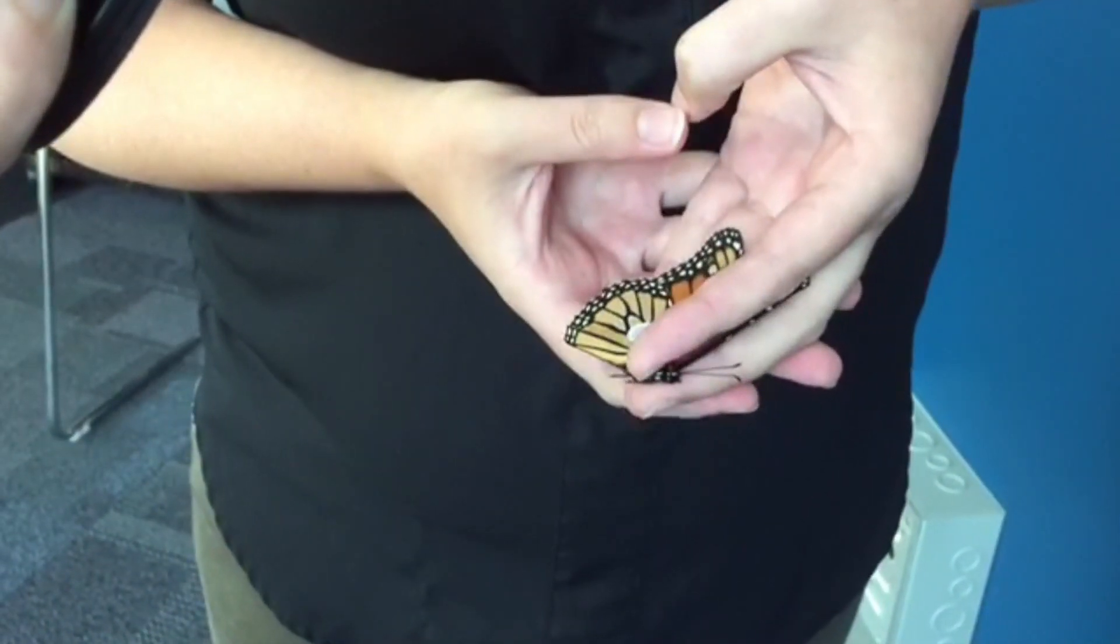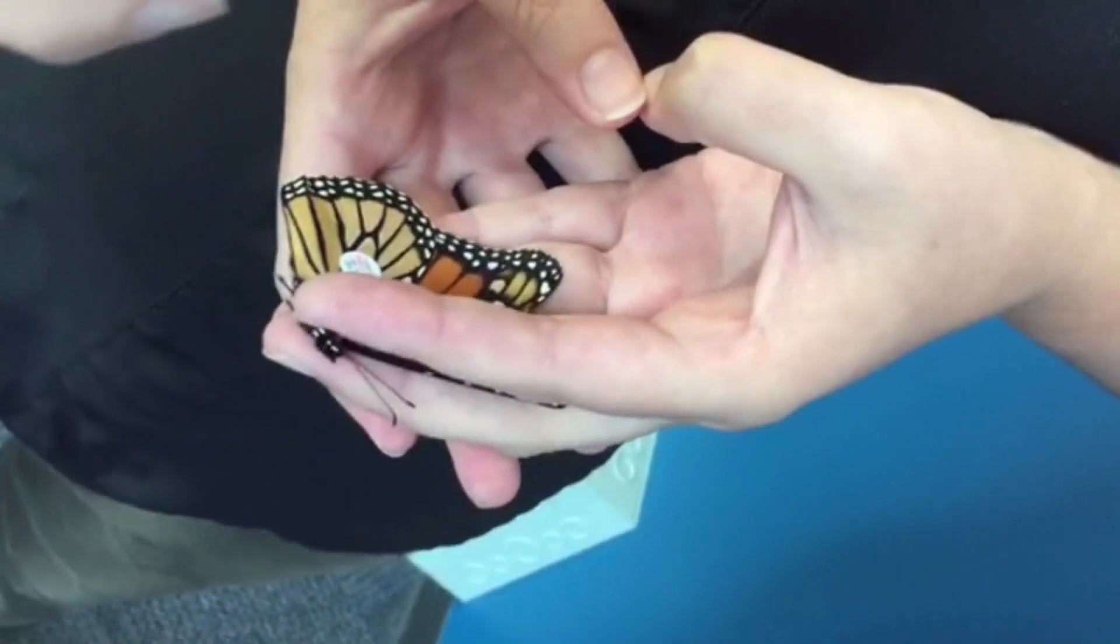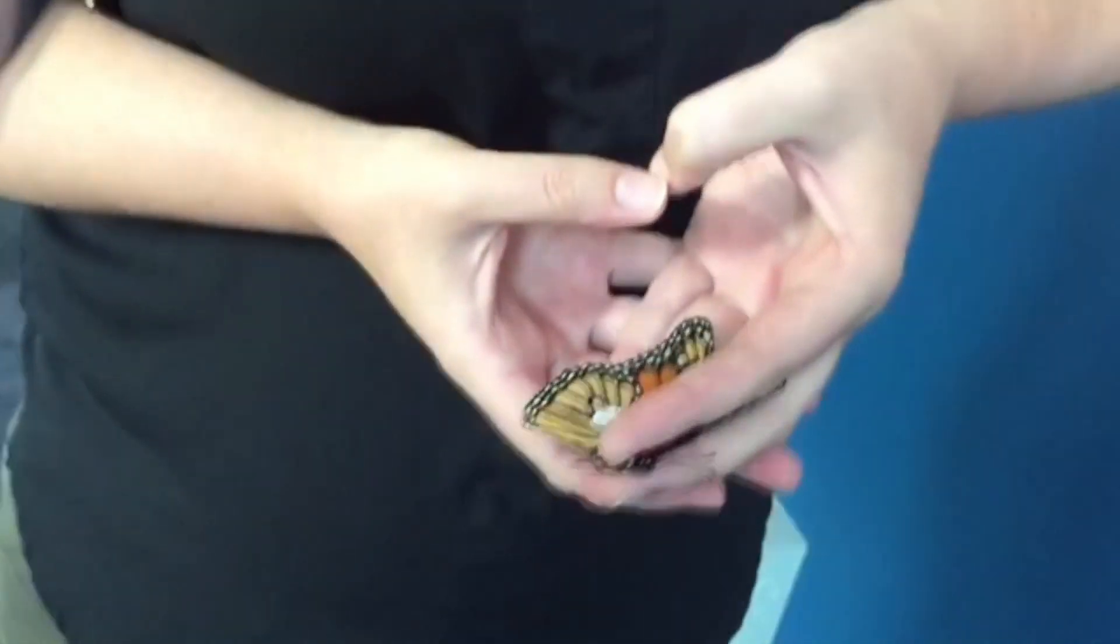it's stuck there. You can see the number there, the organization Monarch Watch that all the data will be sent to, and you release it. Cool.